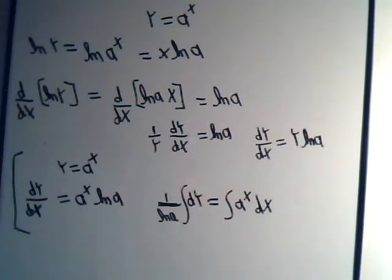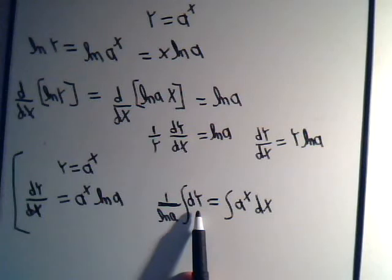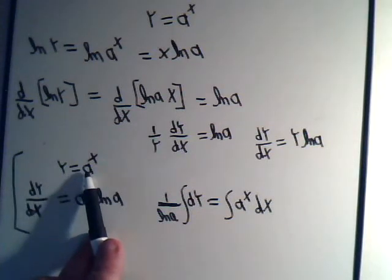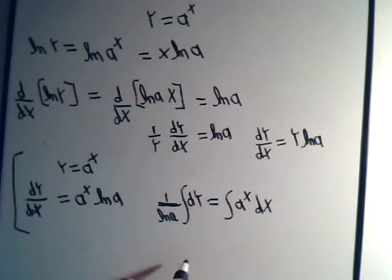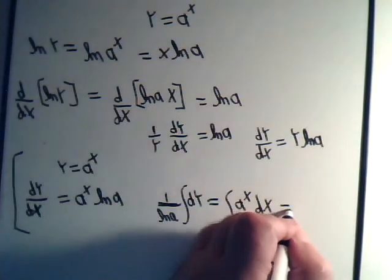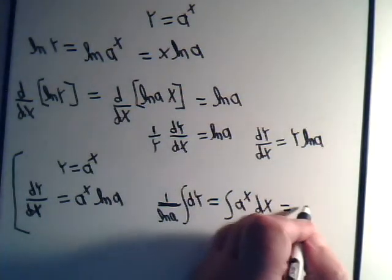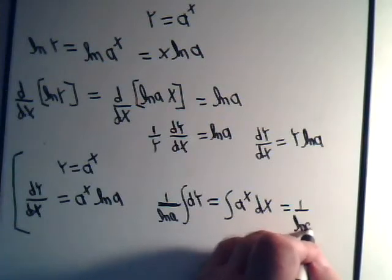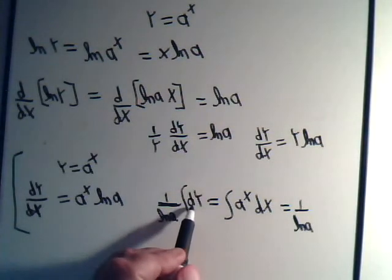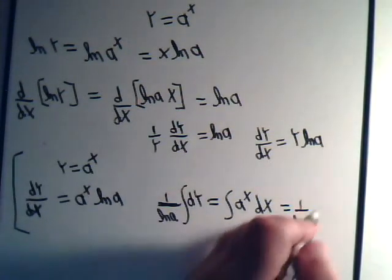We're going to integrate on both sides, of course. And the integral of dy, that's just y. And y is a to the x. So we have 1 over the natural log of a. The integral of dy is y, which is this.